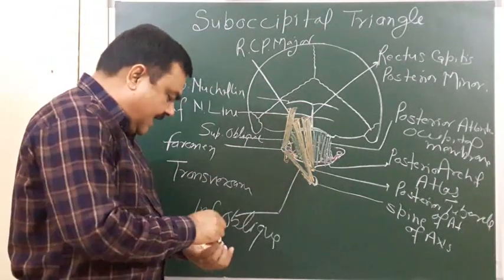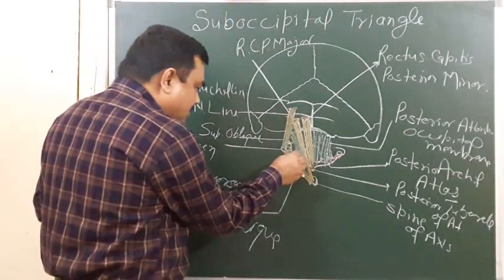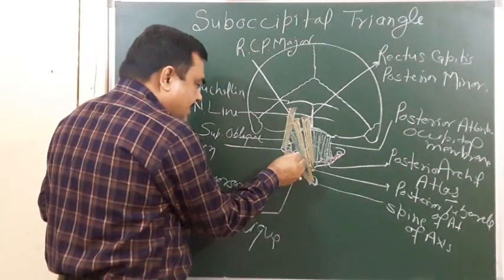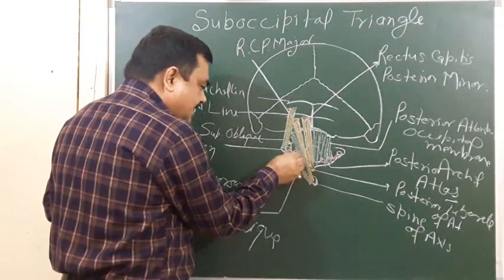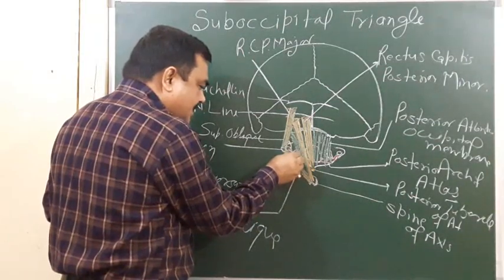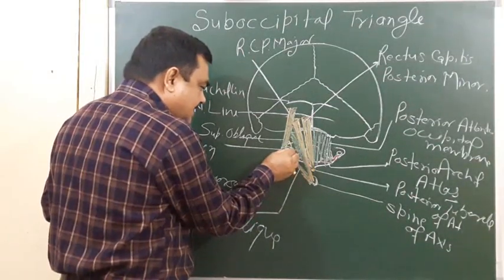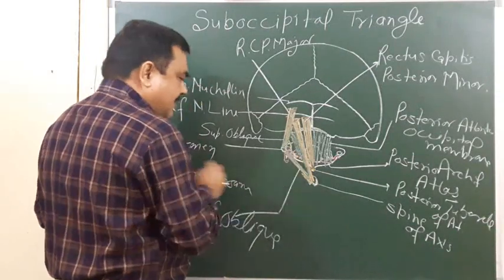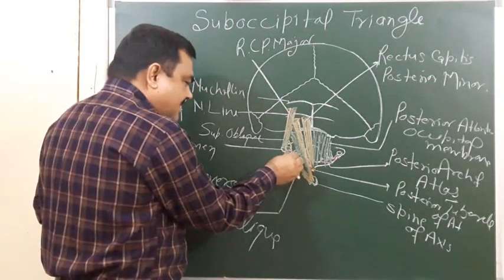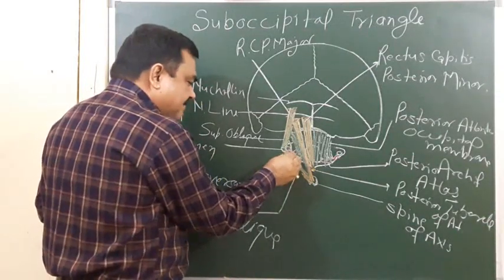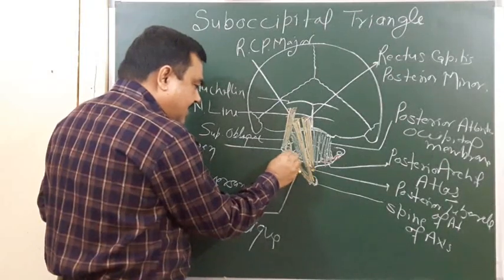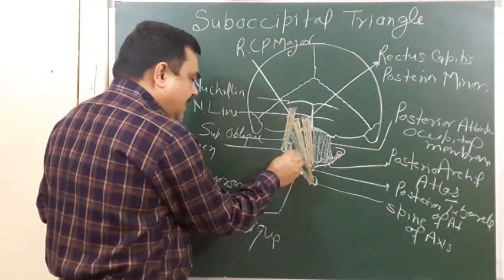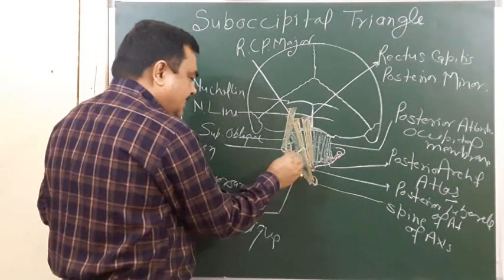Here you can see this is the posterior ramus of C1 — this is spinal nerve C1. It has an anterior ramus and a posterior ramus of C1. This posterior ramus of C1 gives supply to the inferior oblique, superior oblique, and rectus capitis posterior minor and major muscles.